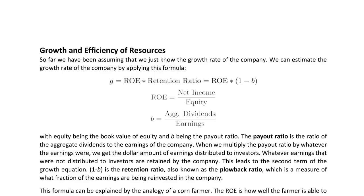Now this isn't going to be perfect, not by any means, but it is starting to get to a company-specific sustainable growth rate for dividends. To calculate this, what we're going to be rooting it in is all about efficiency of the use of resources. The measure we're going to be talking about here is return on equity — in particular, the return on book equity. ROE can be thought of as a measure of efficiency: for every unit of book equity, we get a certain amount of net income.